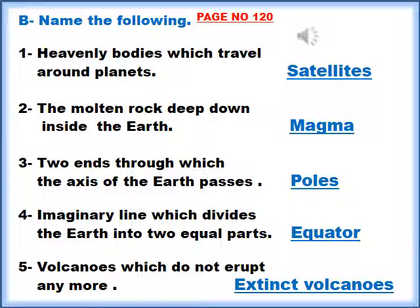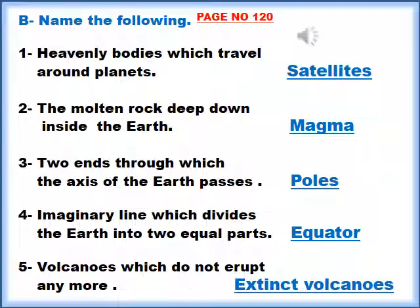Now move on to page number 120, Exercise B — name the following. Number one: Heavenly bodies which travel around the planets are called satellites. Number two: The molten rock deep down inside the earth is called magma. Number three: The two ends through which the axis of the earth passes are called the poles.